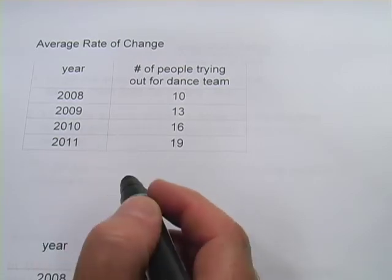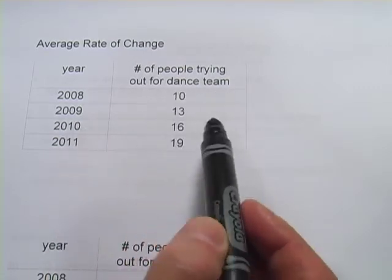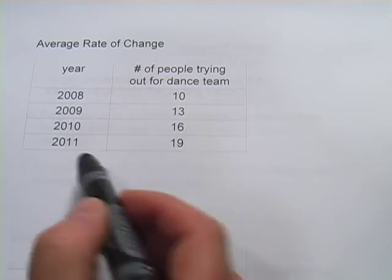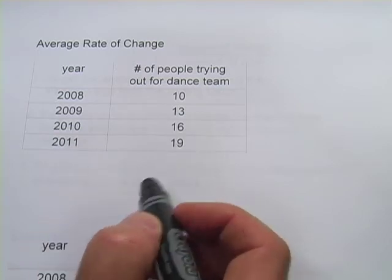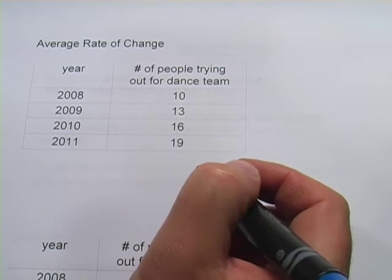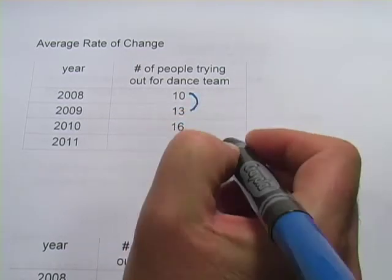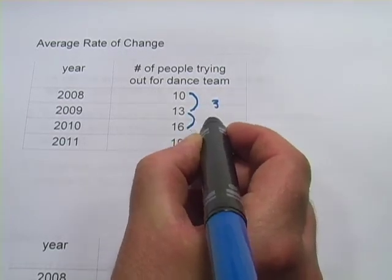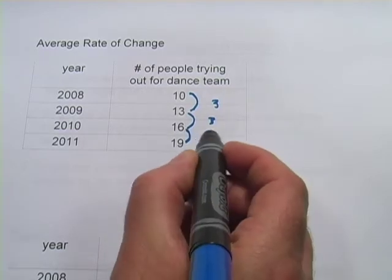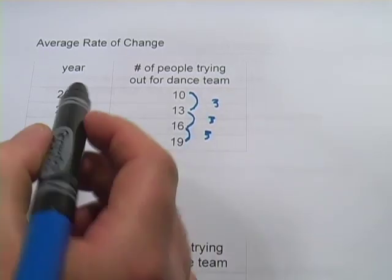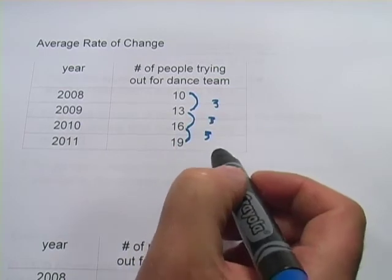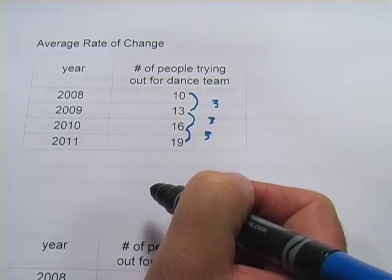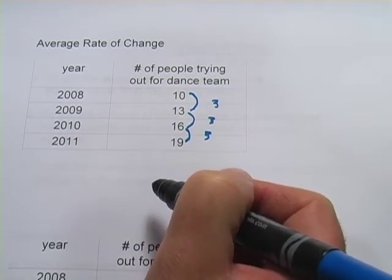Look at this first set of data here. We have years and then we have the number of people trying out for the dance team. In 2008 it was 10, in 2009 it was 13, 2010 it was 16, and 2011 it was 19. You may be able to see right away what the rate of growth is here. From 2008 to 2009 the increase was 3, next year the increase was from 13 to 16 — that's an increase of 3, and the next year from 16 to 19 the increase was 3. So over these years we have an increase of 3 people per year, and that's usually how we express an average rate of change — it's per some time period.